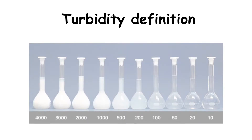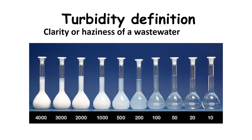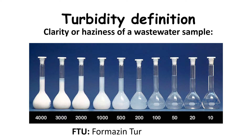Turbidity in wastewater treatment describes the clarity or haziness of a wastewater sample. The level of cloudiness or the presence of suspended particles is usually measured in FTU, which stands for Formazin Turbidity Unit. Samples with less than 20 FTU are very clear, whereas samples with 500 FTU and more become completely opaque.